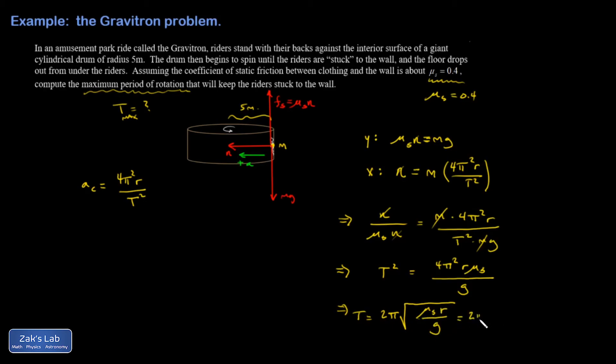Plug in the numbers. I get 0.4, 5 meter radius of curvature. g is 9.8. And we'll figure out how slow this thing can move before people start sliding down the wall.